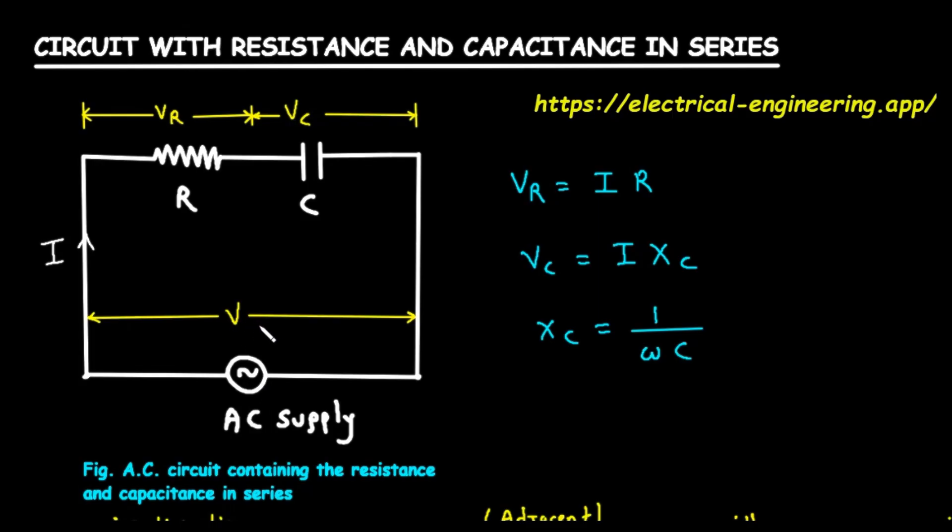Connected to this supply, we have two components in a single loop. This arrangement is called in series, which means the electric current has only one path to follow. The current, which we label with a capital I, flows out of the supply, through the first component, then through the second, and back to the supply.